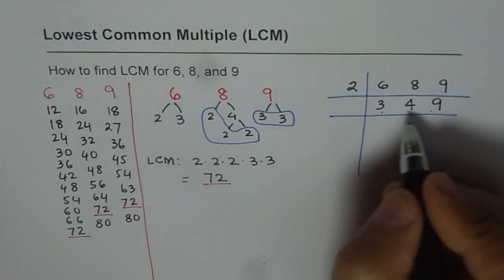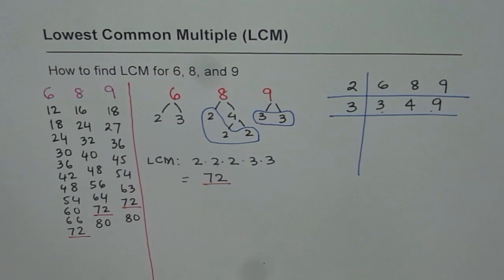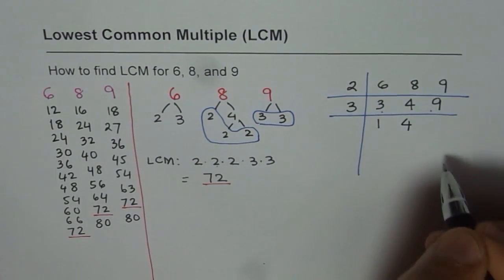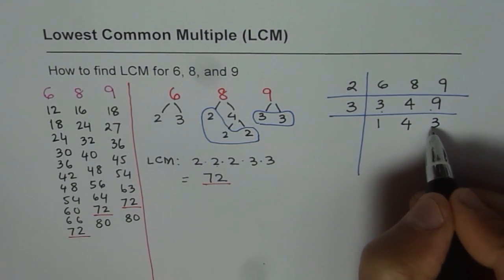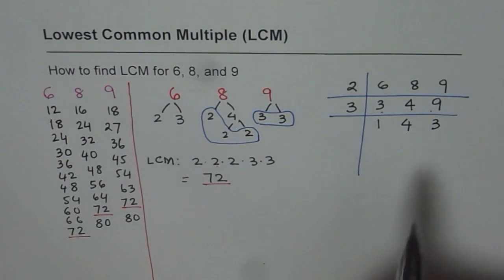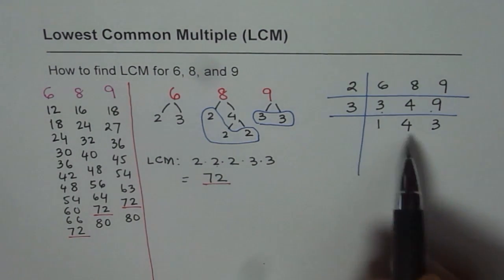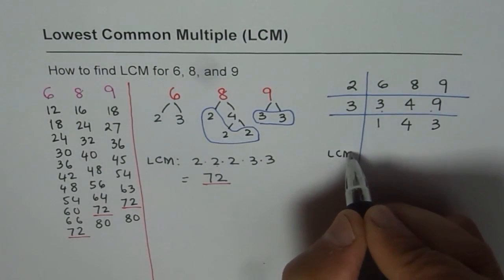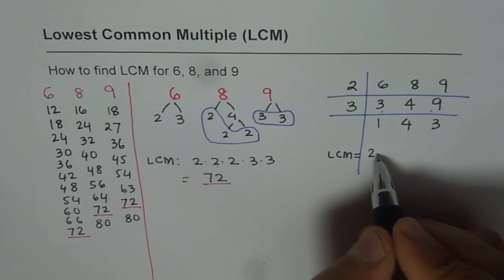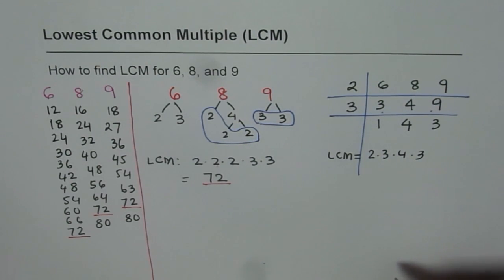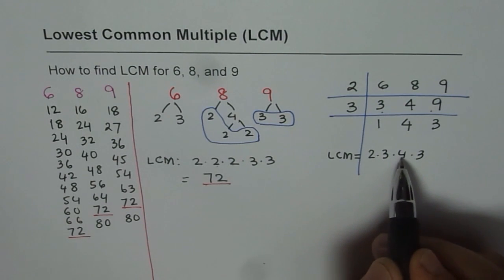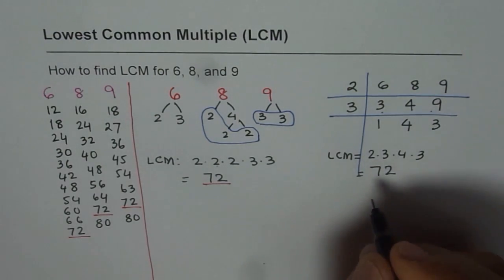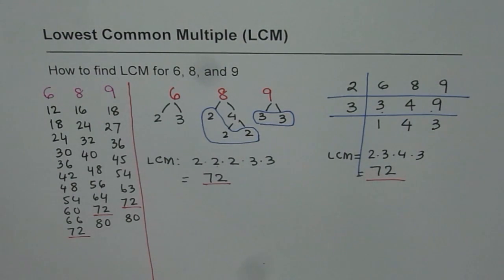Now we can divide at least 2 of these numbers by 3 — 3 is a common factor for 2 of these numbers. Let's divide by 3: 3 divides into 3 one time. 4 — 3 is not a factor, so we write 4 as such. And 3 goes into 9 three times. Now 4 and 3 cannot be divided by any common number, and therefore that brings us to the LCM. The least common multiple will be the product: 2 times 3 times 4 times 3. That gives 2 times 3 is 6, 6 times 4 is 24, and 24 times 3 is 72. So you again get the same answer — that is the third method.